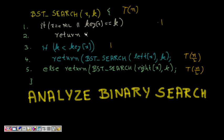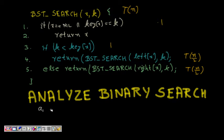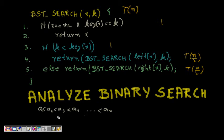In binary search, you are given an array of numbers: a1, a2, a3, a4, till a of n. This array has the property that it is in ascending or descending order — the sequence is already sorted — and we need to search for an element in it.